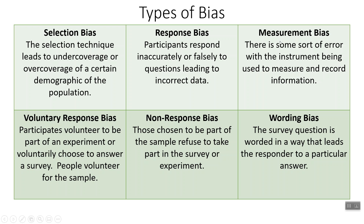Next up, the easiest one to fix: measurement bias. There is some sort of error with the instrument being used to measure and record information. Maybe your ruler is broken, or your scale wasn't zeroed before you started weighing things and everything is off by a little bit. These are usually easy to fix — you just add or subtract something from all of your answers. This happens quite often, especially in scientific fields.